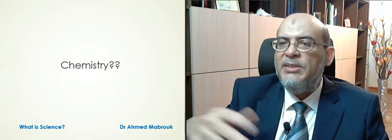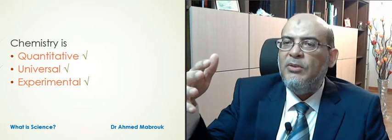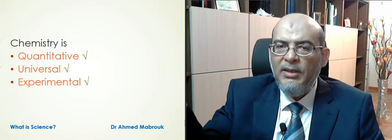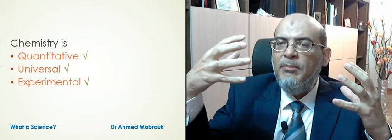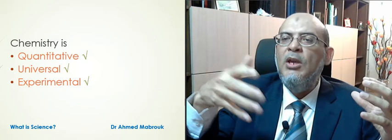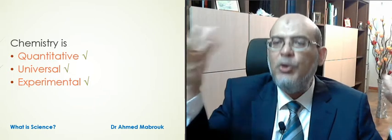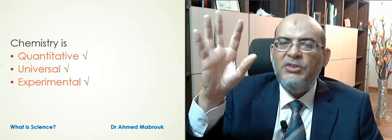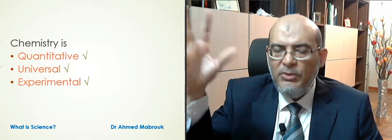Now let's move to chemistry. Chemistry is another good example of following the scientific method. Chemistry is also quantitative — the periodic table is arranged based on the atomic number of the elements, and the reactions show us the relative proportions between the substances involved. For example, we need two molecules of hydrogen and one molecule of oxygen to form one molecule of H₂O, which is water. All chemical formulas are universal and very experimental, so chemistry is another discipline where the scientific method is nicely applied.